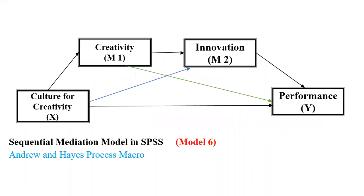Let's first understand what we mean by sequential mediation. If you haven't seen my previous videos, I suggest you go and watch the video related to the types of variables. One type of variable is known as a mediator, but in the sequential mediation model you do not have one mediator — you have more than one mediator. In this model, culture for creativity is our independent variable and performance of the firm is our dependent variable, but the relationship is mediated by two mediators.